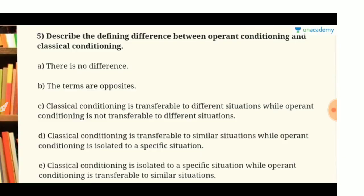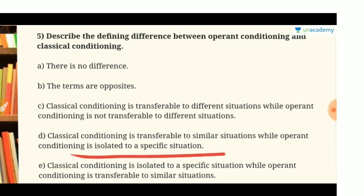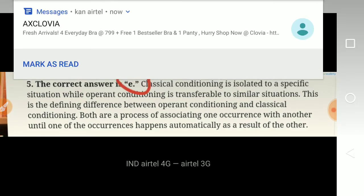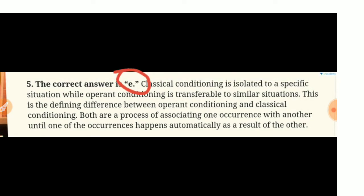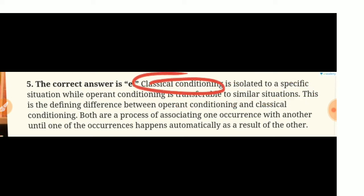Question 5: 'Describe the defining difference between operant conditioning and classical conditioning.' The correct answer is E: classical conditioning is isolated to a specific situation, while operant conditioning is transferable to a similar situation. This is the defining difference — classical conditioning only works in one specific situation, whereas operant conditioning can be applied again in similar situations.